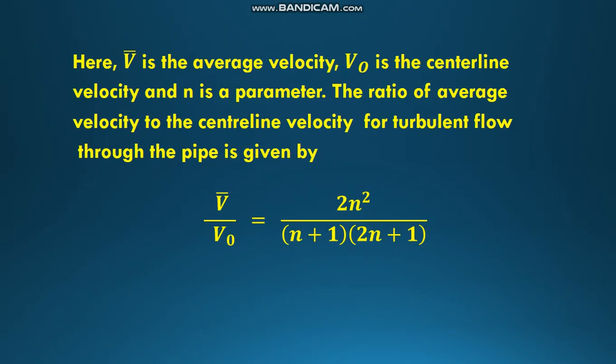Here V̄ is the average velocity, V₀ is the centerline velocity, and n is a parameter. The ratio of average velocity to the centerline velocity for turbulent flow through the pipe is given by V̄/V₀ = 2n²/[(n+1)(2n+1)].